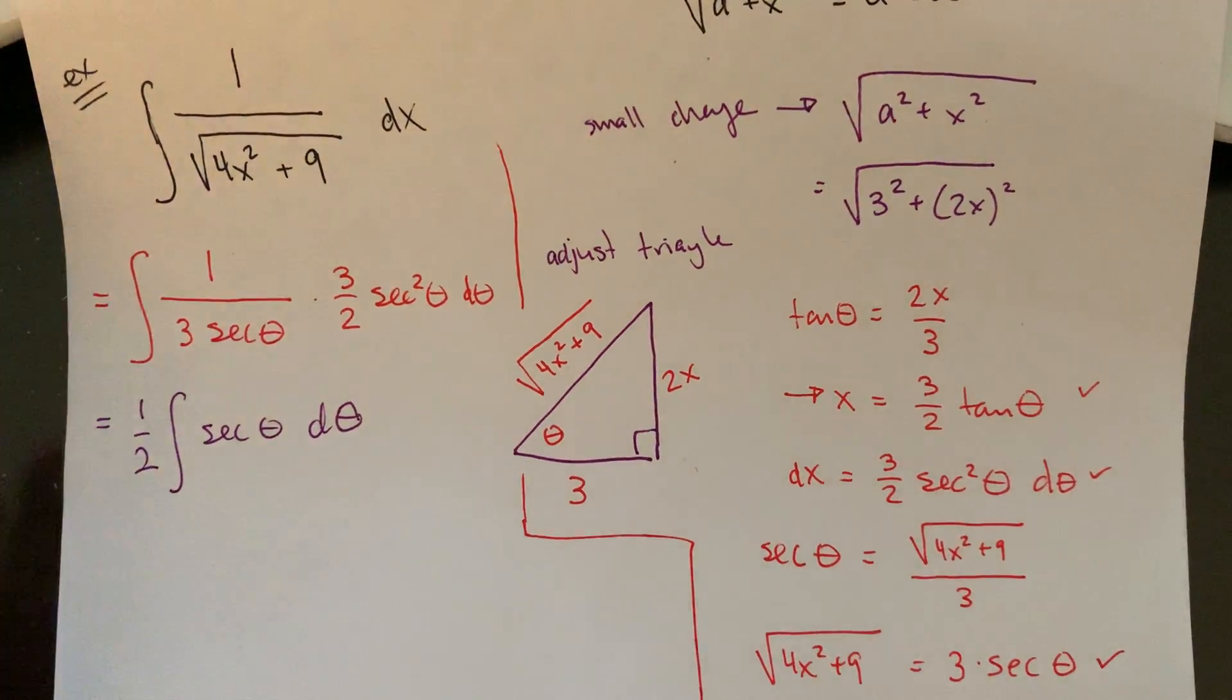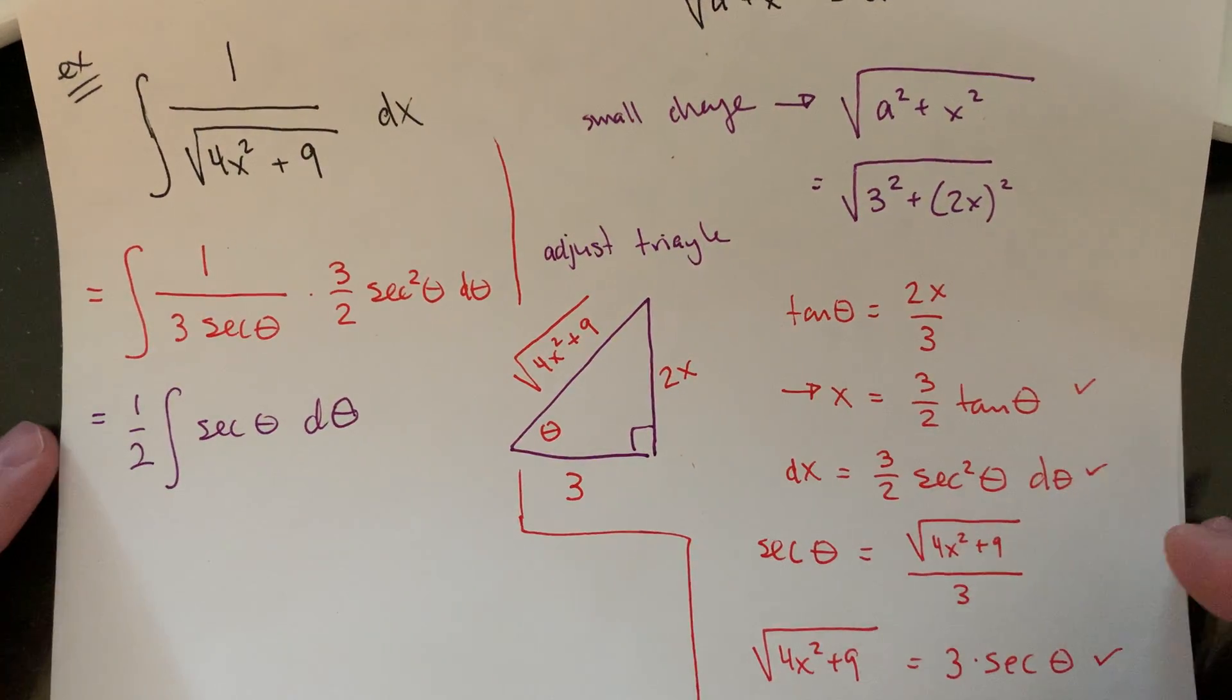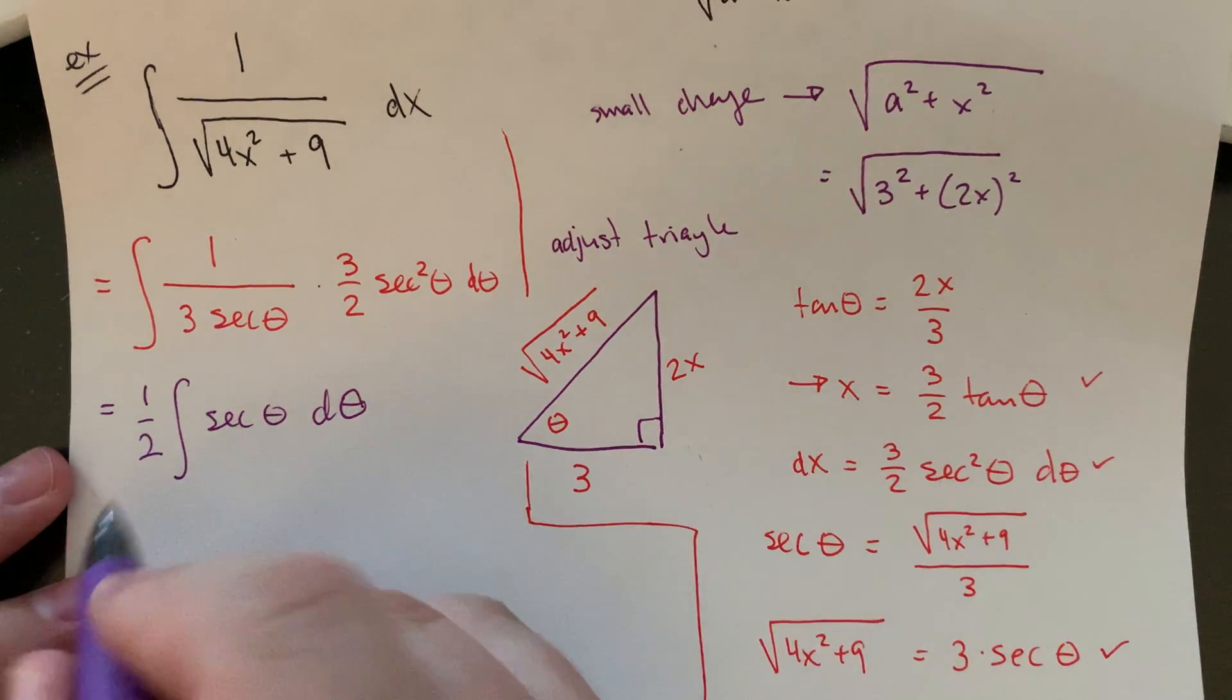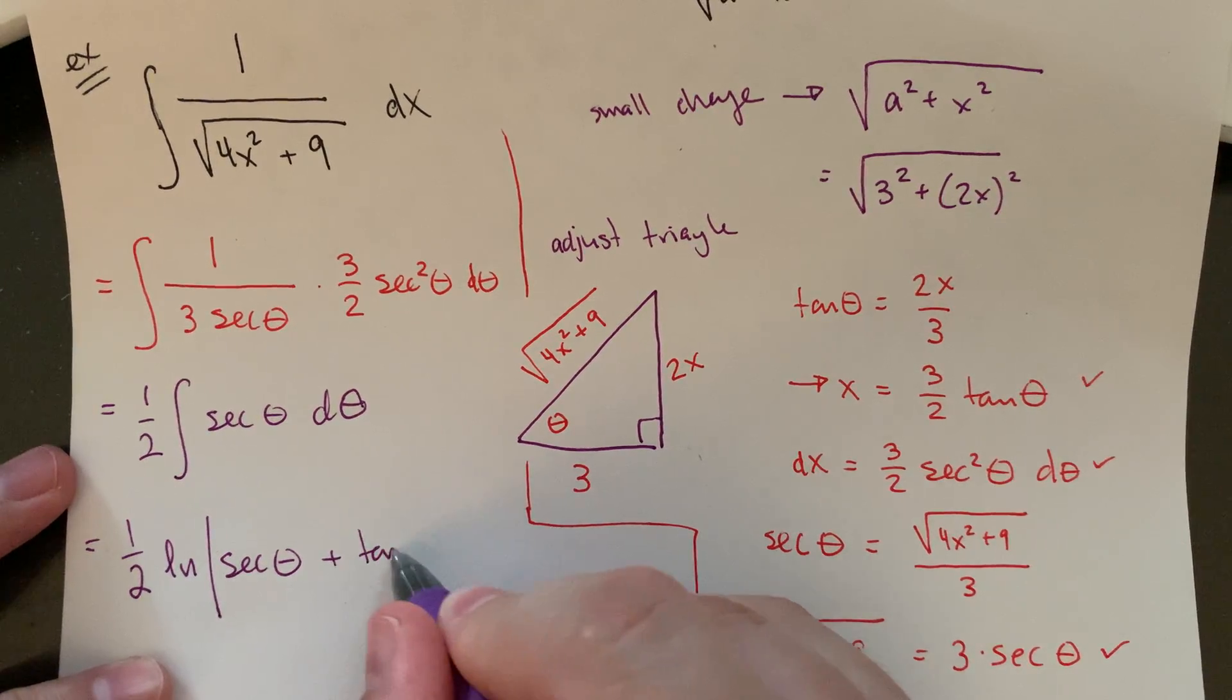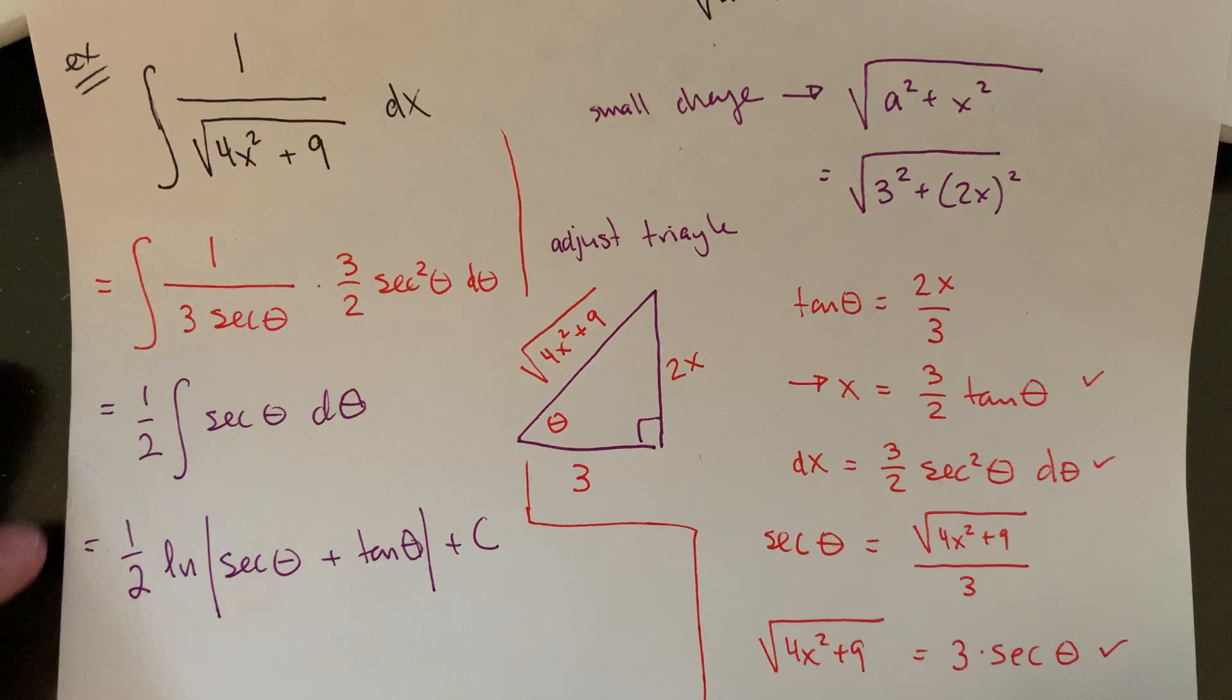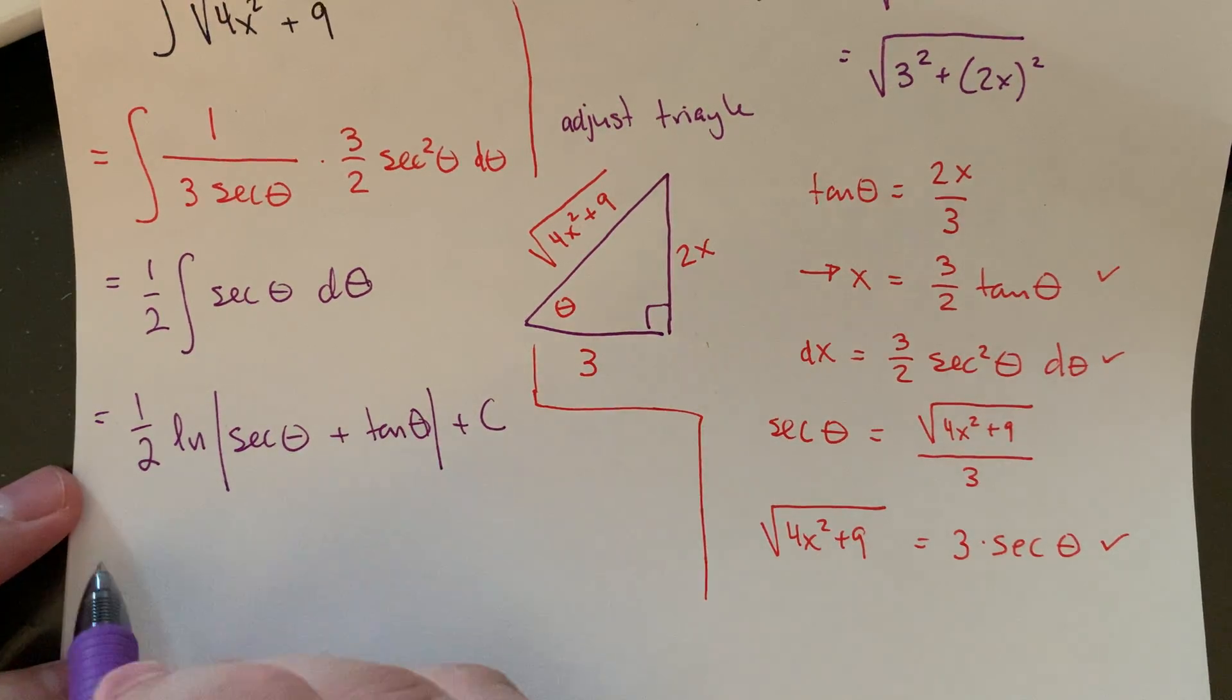That's about as nice an integral as I would expect us to get if we kind of go back to our table. What's that antiderivative going to be? This is sort of similar to the cosecant, but it's positive. So this would be 1 half positive, natural log of the absolute of secant theta plus tangent theta. And the whole thing is plus C.